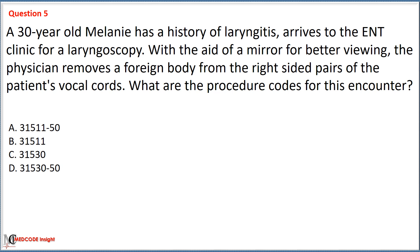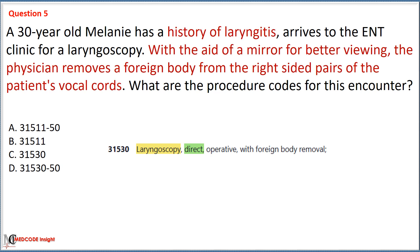Option A: 31511 with modifier 50. Option B: 31511. Option C: 31530. Option D: 31530 with modifier 50. In this scenario, a laryngoscopy procedure is performed to remove a foreign body from the right-sided pair of the patient's vocal cords. Since the provider uses a mirror for better viewing, this indicates that the laryngoscopy is indirect.